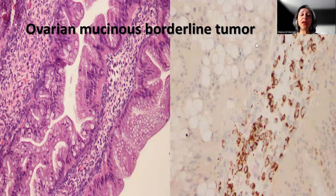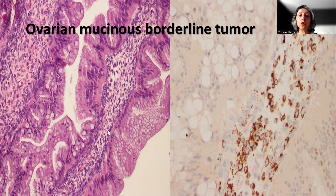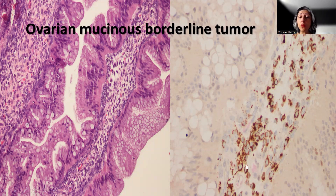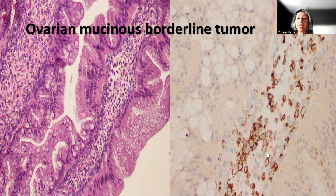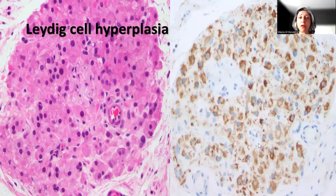This is a very nice case of ovarian mucinous borderline tumor. As we all know, the stromal cells sometimes become luteinized within the stroma of borderline mucinous tumors. SATB2 is actually beautifully positive, showing granular cytoplasmic staining in those luteinized cells.